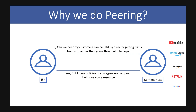Why do we do peering? We want to provide our customers the benefit of directly reaching content providers — your YouTubes, Prime Videos, Amazons, Netflixes. If you're going through multiple hops, the connection will be slow and will lag. A customer requests a video, it plays for 10 seconds and then buffers — we don't want that. We want customers to stream beautifully in 4K or 1080p, so we want to provide robust connectivity.